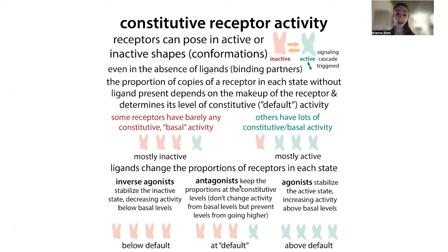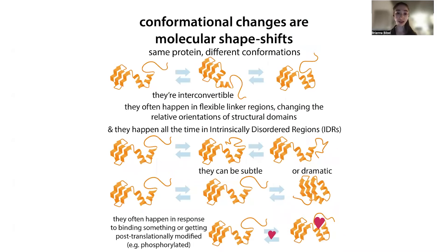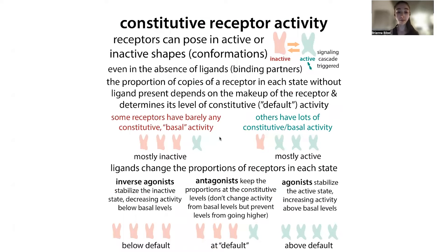An inverse agonist stabilizes the inactive state, pushing more receptors into that state than you'd have at baseline. So you end up with activity below the basal activity level. Depending on how strong the inverse agonist is, you can get a partial or full reduction — but you're getting below the basal level because you're decreasing the proportion in the active state.